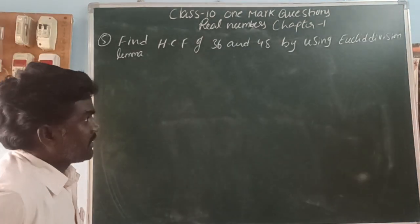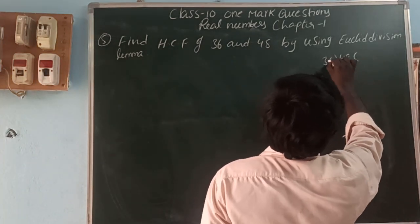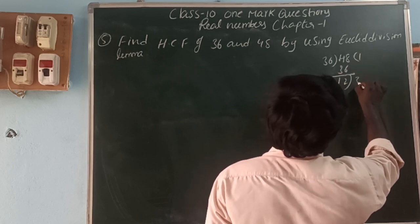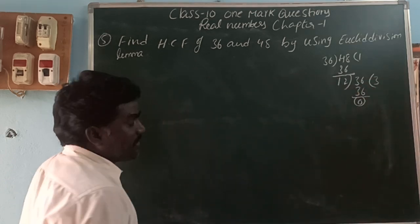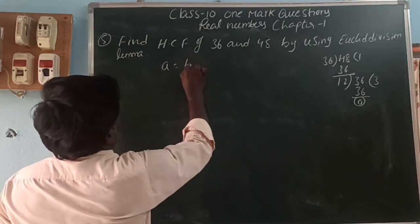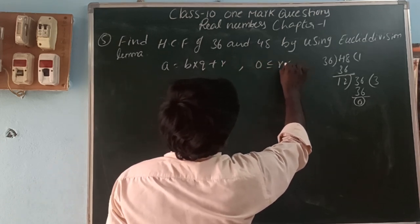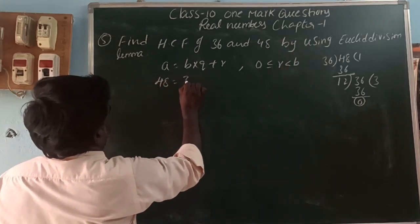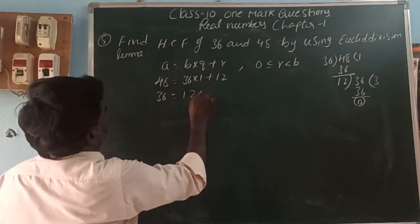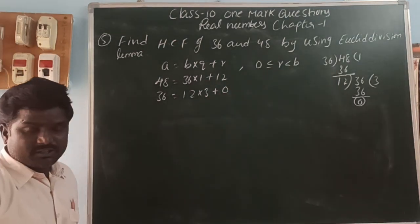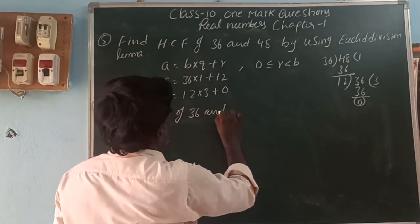Find the HCF of 36 and 48 using Euclid's division algorithm. The Euclid division lemma is: a = b·q + r, where 0 ≤ r < b. So 48 = 36·1 + 12, then 36 = 12·3 + 0. Where we get remainder 0, the divisor at that step is the HCF. So the HCF of 36 and 48 is 12.